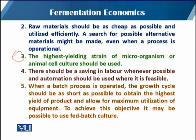The fourth objective is that there should be savings in labor whenever possible, and automation should be used where it is feasible, just to reduce costs. When a bench process is operated, the growth cycle should be as short as possible to obtain the highest yield of the product and allow maximum utilization of the equipment.